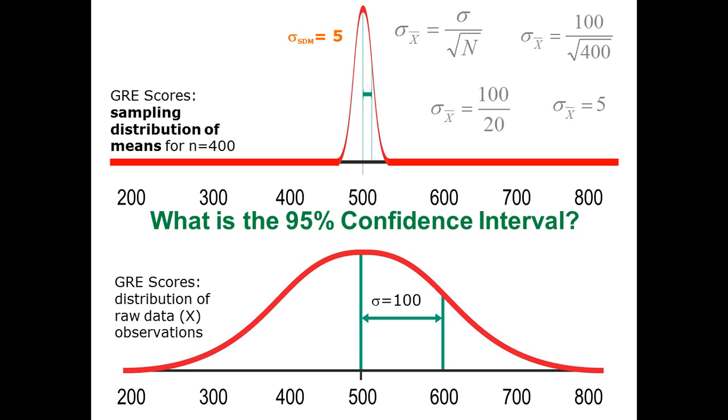So the 95% confidence interval is just starting from 500 and measuring down two standard deviations. In other words, two standard errors. By the way, this sigma SDM means exactly the same thing as sigma sub X bar. They both mean the standard deviation of this distribution, or the term we use is standard error of the mean. We could just write SEM equals 5. Same thing.